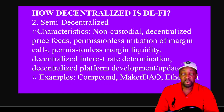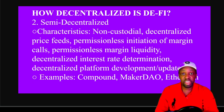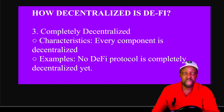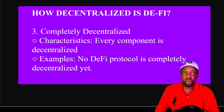For example, the Ethereum EIP-1559 update: they noticed gas fees were too high, so they voted and concluded they would start burning coins to reduce supply in exchange for lower fees on the network. The last level would be completely decentralized — every single component of the dApp or blockchain is decentralized. Right now, no DeFi protocol is completely decentralized; typically the protocol runs on a decentralized platform like Ethereum but the dev team programming it is centralized.